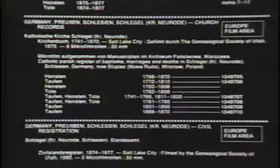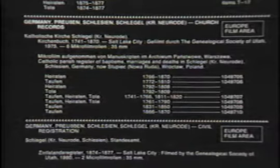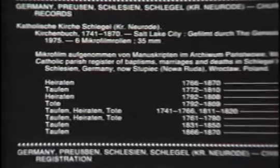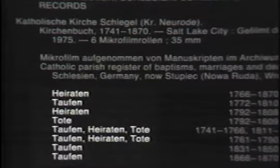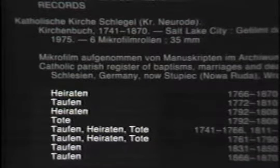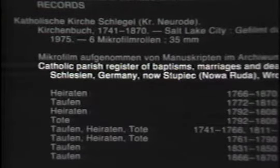Now scan the headings. There are two types of records here: church records and civil registration. Notice that the entries are basically the same as all the others we've looked at — a heading, a brief description, the years covered, and the film numbers. Records are described in the same language they're written in, so these records are described in German. For those who don't read German, there are also notes in English.